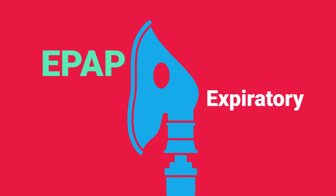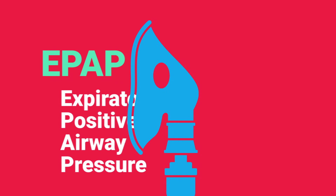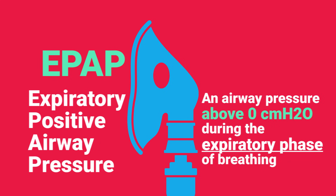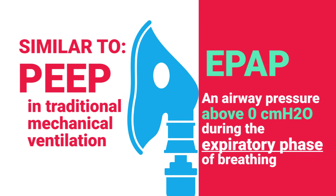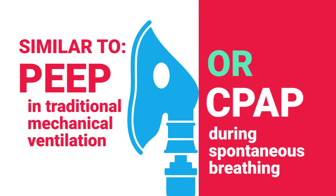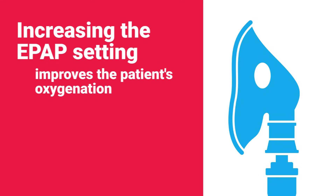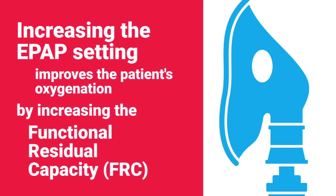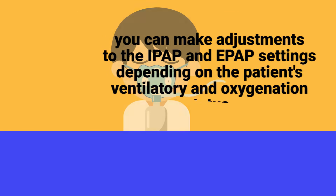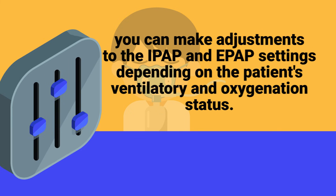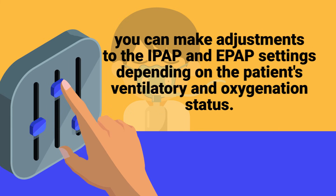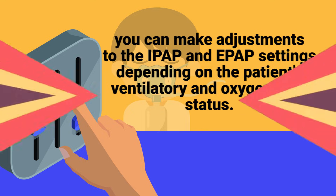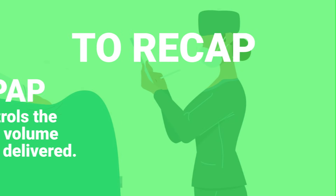EPAP stands for expiratory positive airway pressure. It's an airway pressure that is above zero during the expiratory phase of breathing. It works similar to PEEP in traditional mechanical ventilation, or CPAP during spontaneous breathing. Increasing the EPAP setting improves the patient's oxygenation by increasing the functional residual capacity.